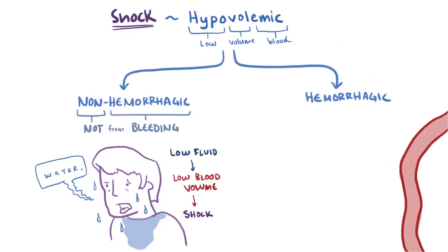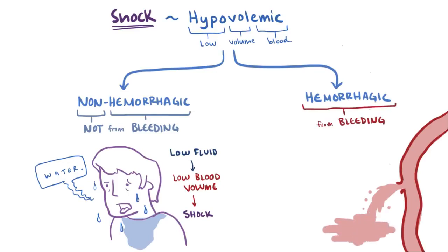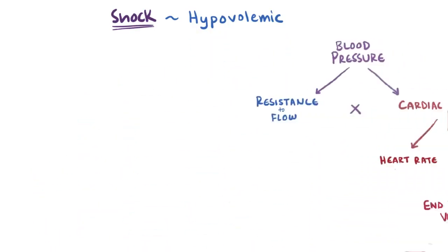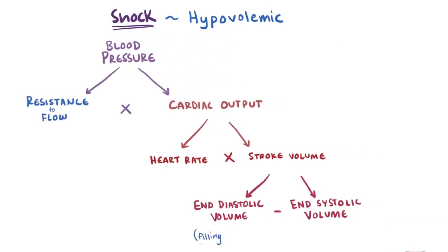Eventually your loss of fluid through sweat would reduce blood volume to where it wouldn't be enough to supply your body's organs, and you'd develop hypovolemic shock. Hemorrhagic hypovolemic shock, on the other hand, is loss of blood volume through ruptured blood vessels — in other words, from bleeding. A loss of about 20% of your total blood volume, roughly one liter, can be enough to induce hypovolemic shock. When that liter of blood leaves the circulation, the total volume filling into the heart goes down, meaning the end diastolic volume goes down, which causes stroke volume to go down, which causes cardiac output to go down, and finally blood pressure goes down.